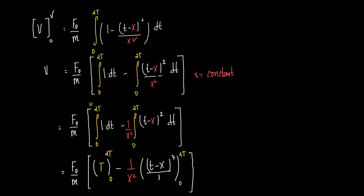For the second integral, we use the formula: ∫(t - a)ⁿ dt = (t - a)^(n+1)/(n+1). So ∫(t - x)² dt = (t - x)³/3.